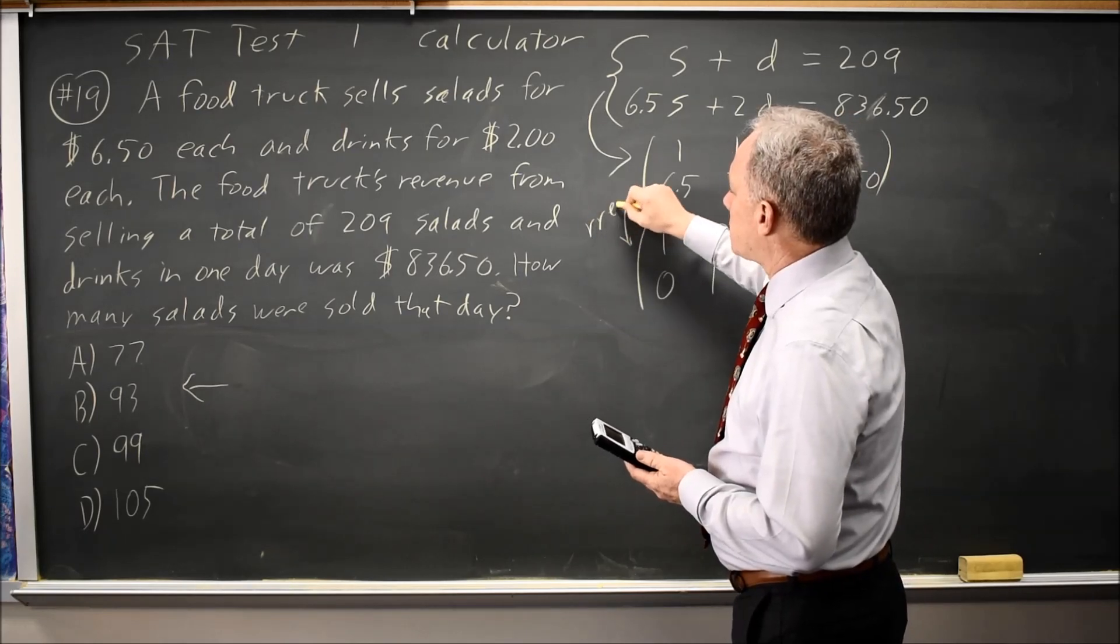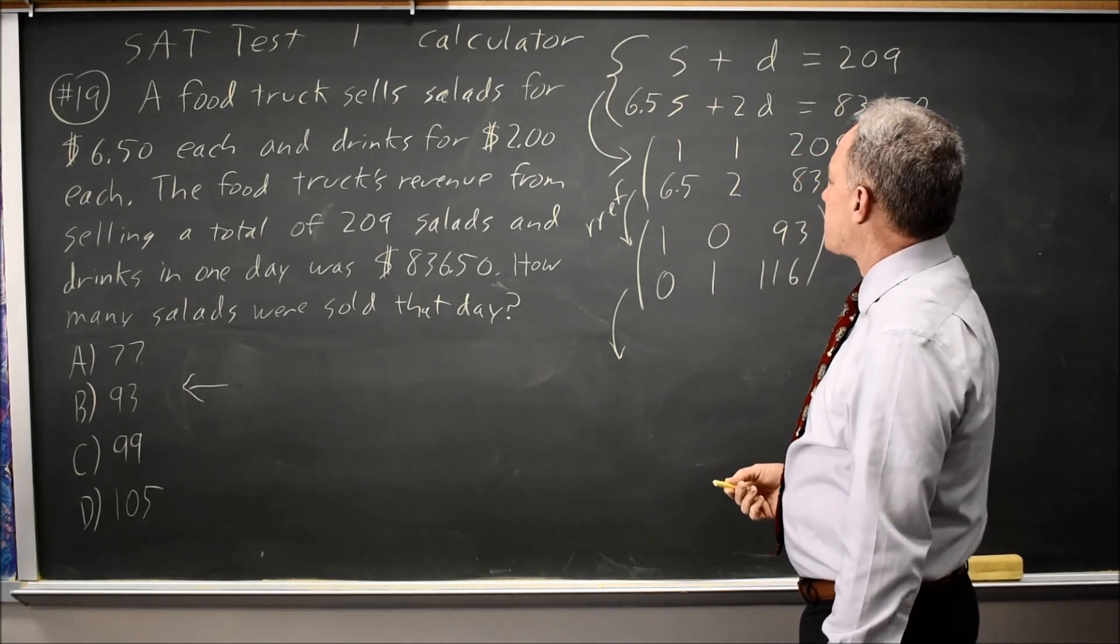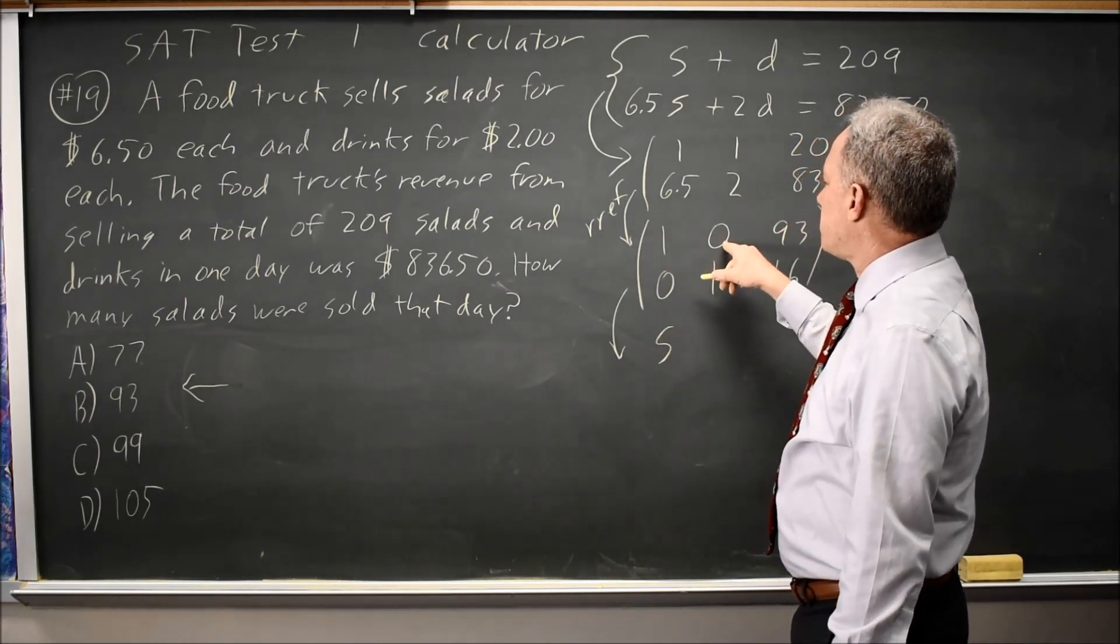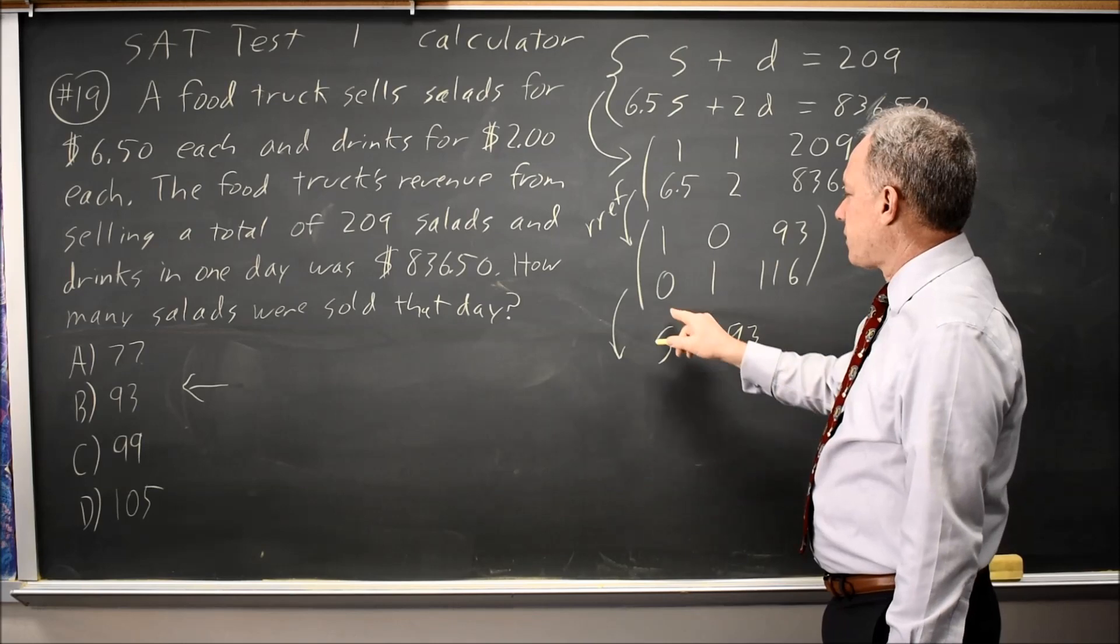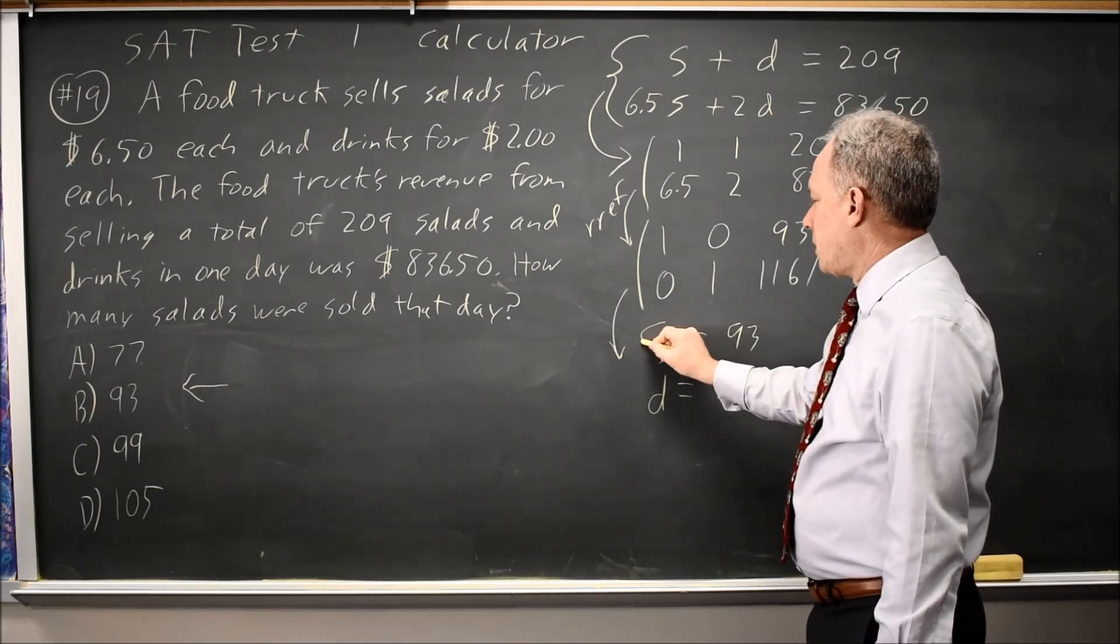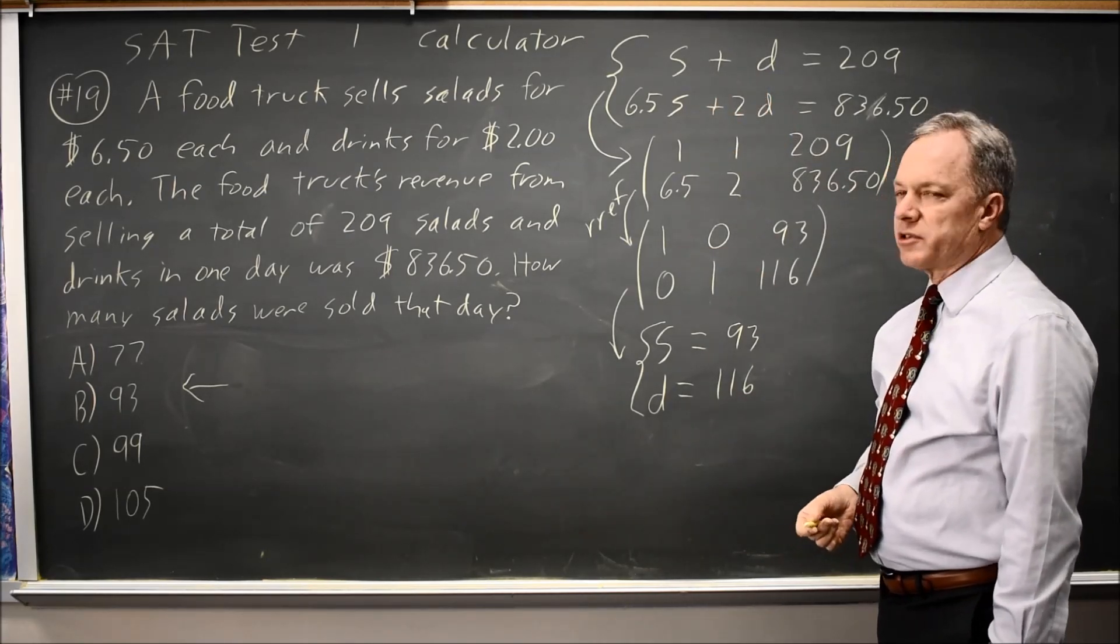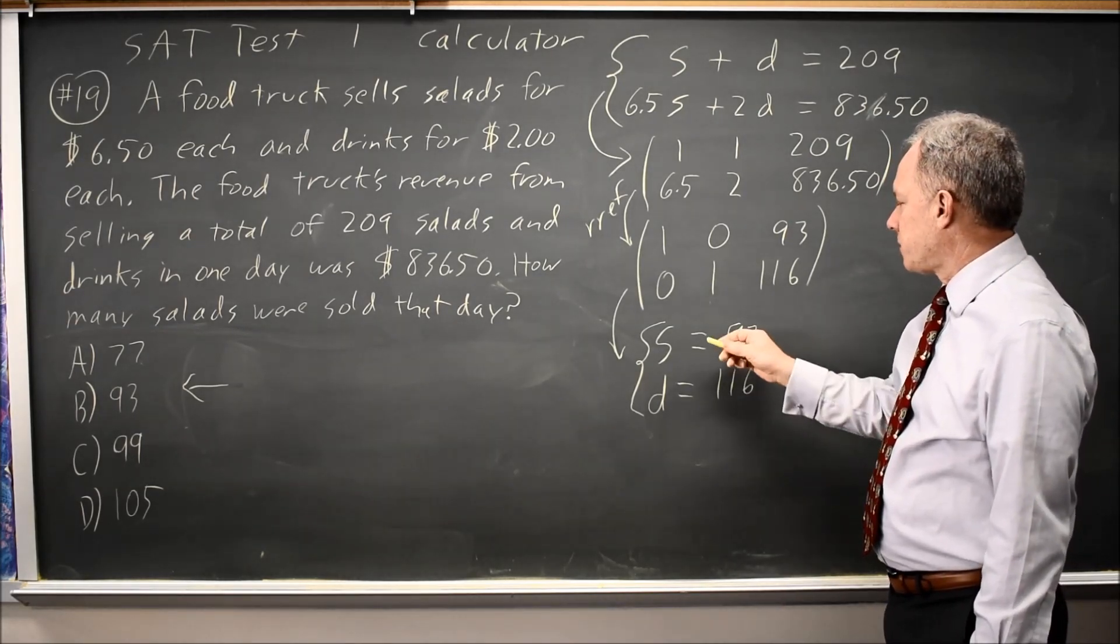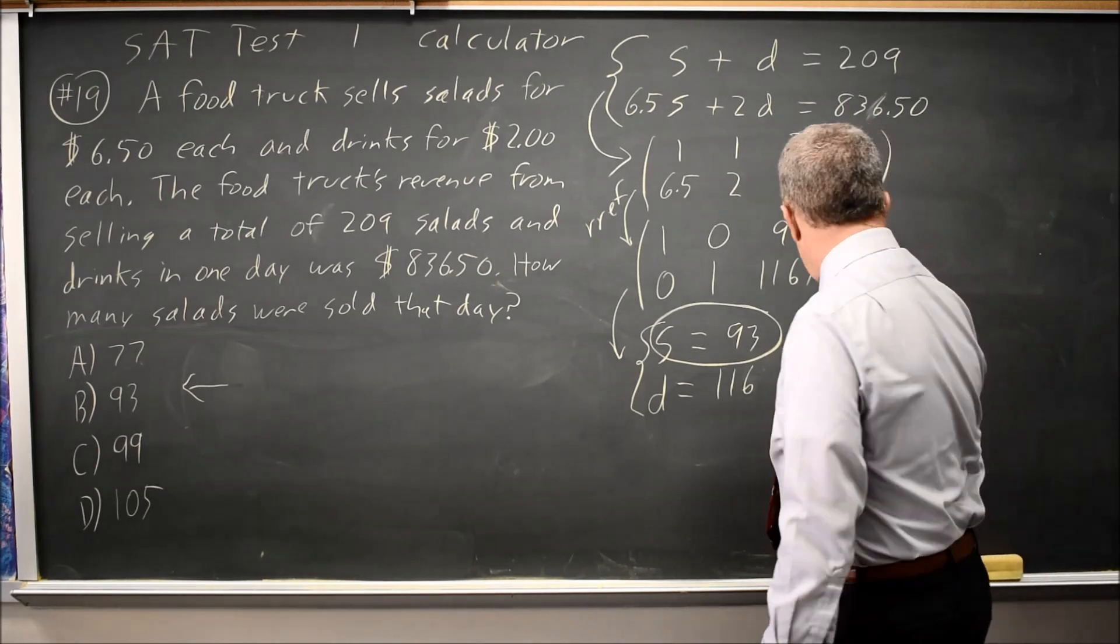So this was reduced row echelon form. Now I'm going to convert this matrix back to a system using the same rules I used to go from the system to matrix. So this 1 in this position stands for 1 times S. A 0 here means plus 0D, but 1S plus 0D is just S equals 93. The second row is 0S plus 1D, which just means D equals 116. This system has the same solution as the original system because I converted using the rules for reduced row echelon form, which can be done by hand, but certainly not as a good choice under time pressure. And they're asking for S, which is 93 again, the same answer I got by the plug-in choices.